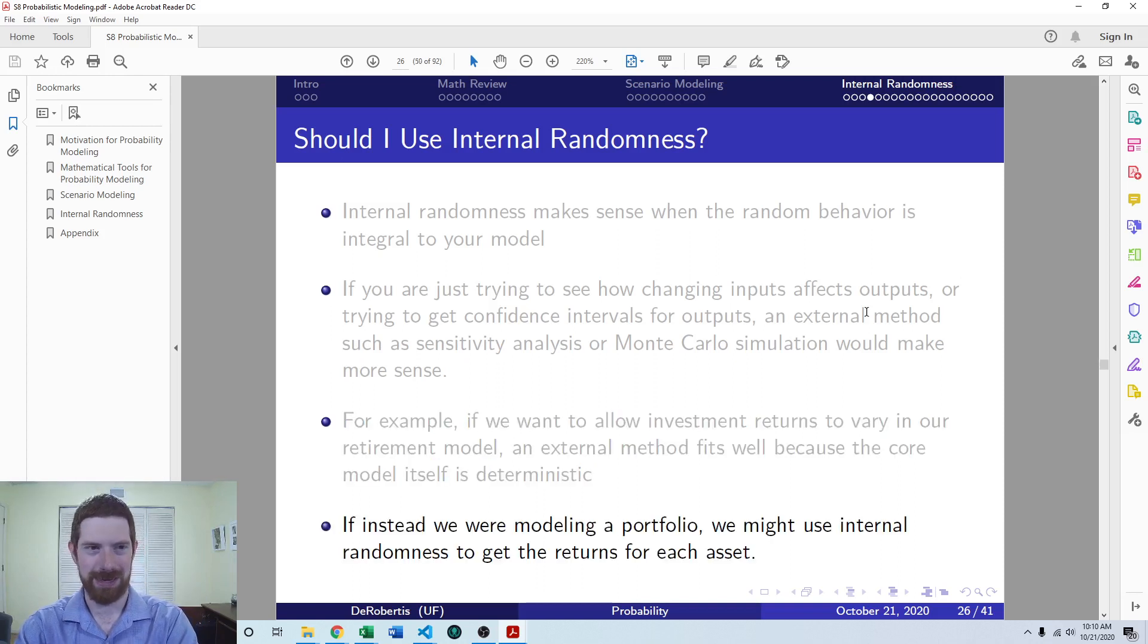But as I mentioned, a good example where you might want to use internal randomness is in a portfolio model. Because you can never know what to expect on investment returns of individual assets. They may as well be random for modeling purposes. And so building that randomness right into the model, that means you'll be able to get different statistics relating to the variation in the portfolio returns within the core model.